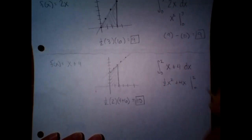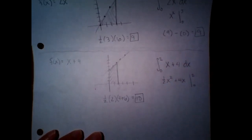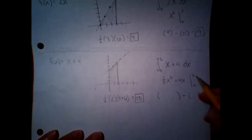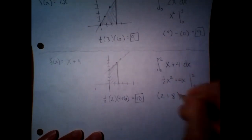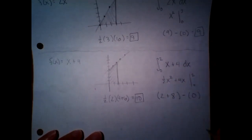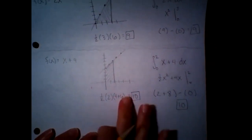We go from zero to two. You guys are making me kind of nervous. All right. Upper boundary minus lower boundary. So if you plug in two, two squared is four. Half of that is two. Four times two is eight. Lower boundary is just going to give you zero. And that comes out to be 10. So same as both. Okay.